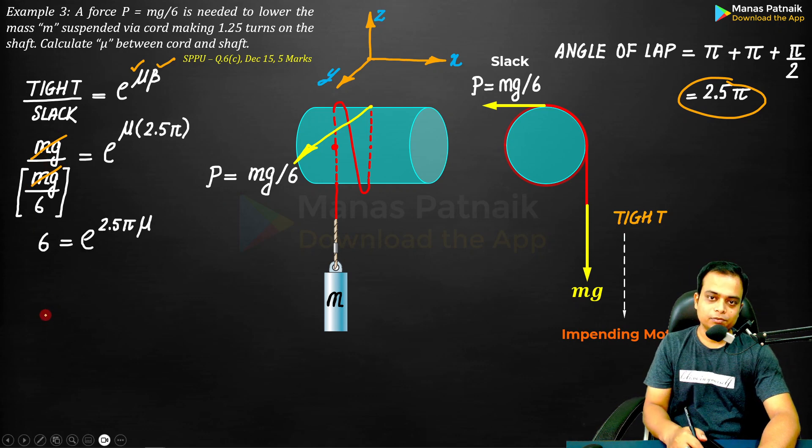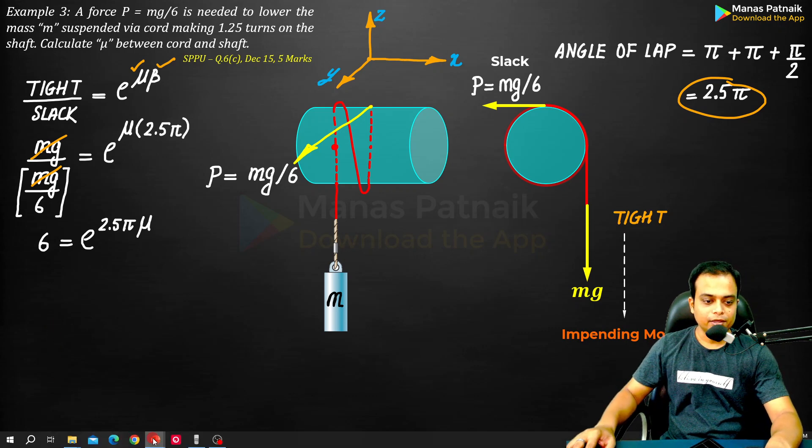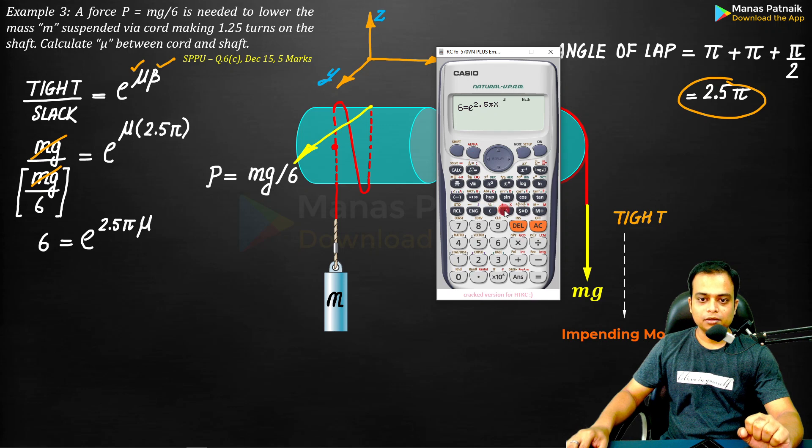Now how do you solve this? You can just punch in the value in a calculator. Let me show this to you. 6 is equal to e raised to the power 2.5π μ - 2.5π and μ, let us take this as x. You just need to solve this.